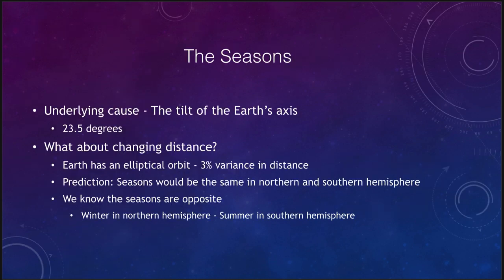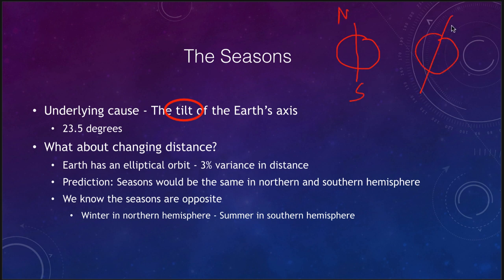What is the cause of the seasons? There is an underlying cause, and that is the tilt of the earth's axis. The earth is tilted — not going straight up and down with a north pole and a south pole, but being tilted at an angle. There are times when the north pole is leaning towards the sun, and times when the north pole is leaning away from the sun. That is what gives us the seasons — the 23 and a half degree tilt of the earth's axis.